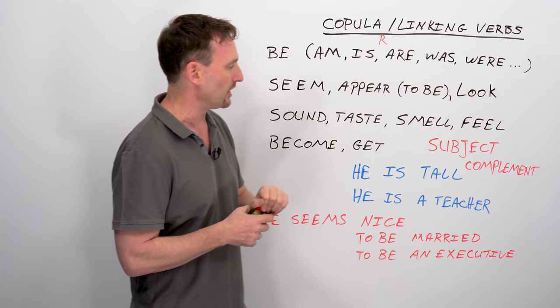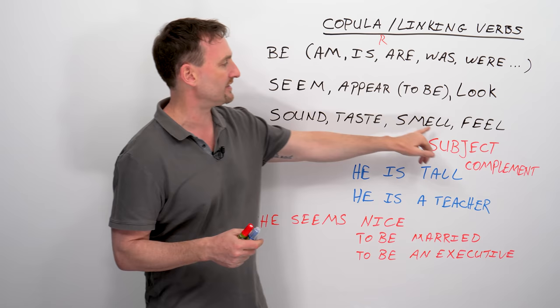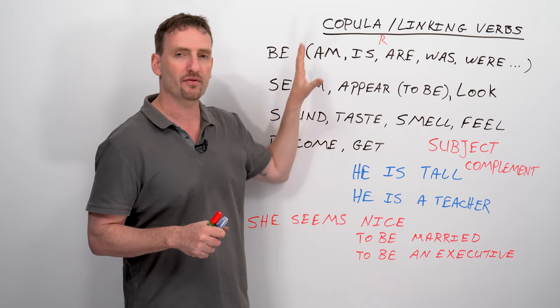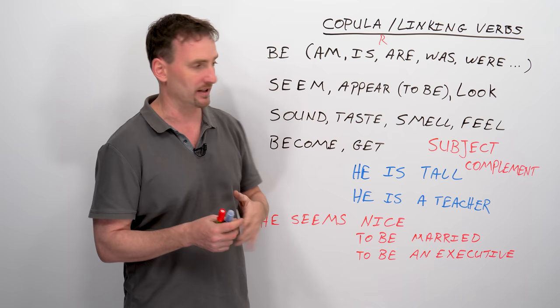So the most common copula verb is the be verb and its different tenses: am, is, are, was, were, etc. The most common other copula verbs are seem and appear, and you can combine them with to be. And look. And then you have your sense verbs: sound, taste, smell, and feel.